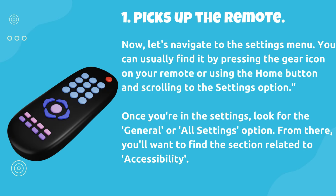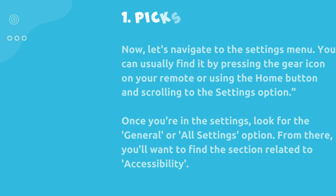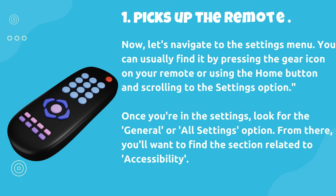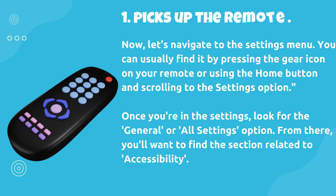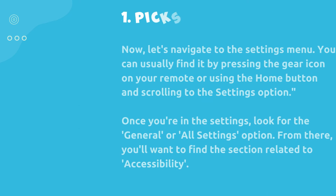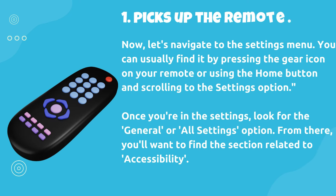Now, let's navigate to the settings menu. You can usually find it by pressing the gear icon on your remote, or using the home button and scrolling to the settings option. Once you're in the settings, look for the general or all settings option. From there, you'll want to find the section related to accessibility.